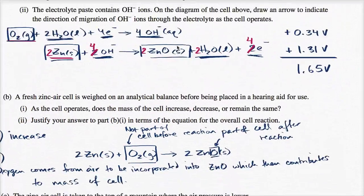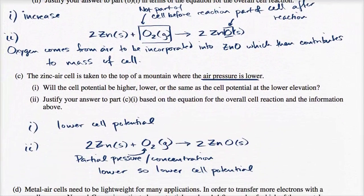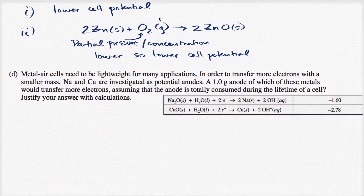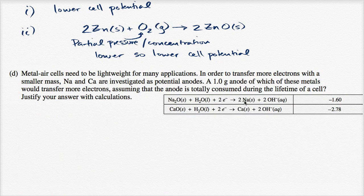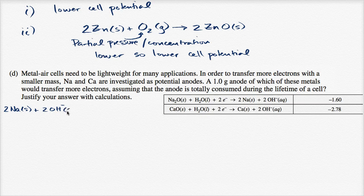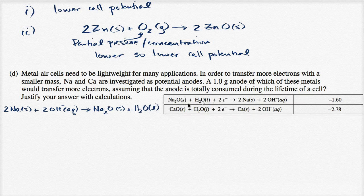Let me rewrite the reactions going from right to left. For the sodium reaction: for every two moles of sodium solid, plus two moles of hydroxide (aqueous), we yield sodium oxide (solid), plus liquid water, plus two electrons. This is really important because we want to think about how many electrons one gram of each metal would yield — how many electrons are they going to be able to transfer through that wire.